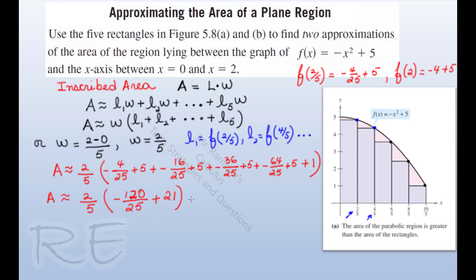A is approximately two-fifths times negative 120 plus 21 times 25, which is 525 divided by 25.